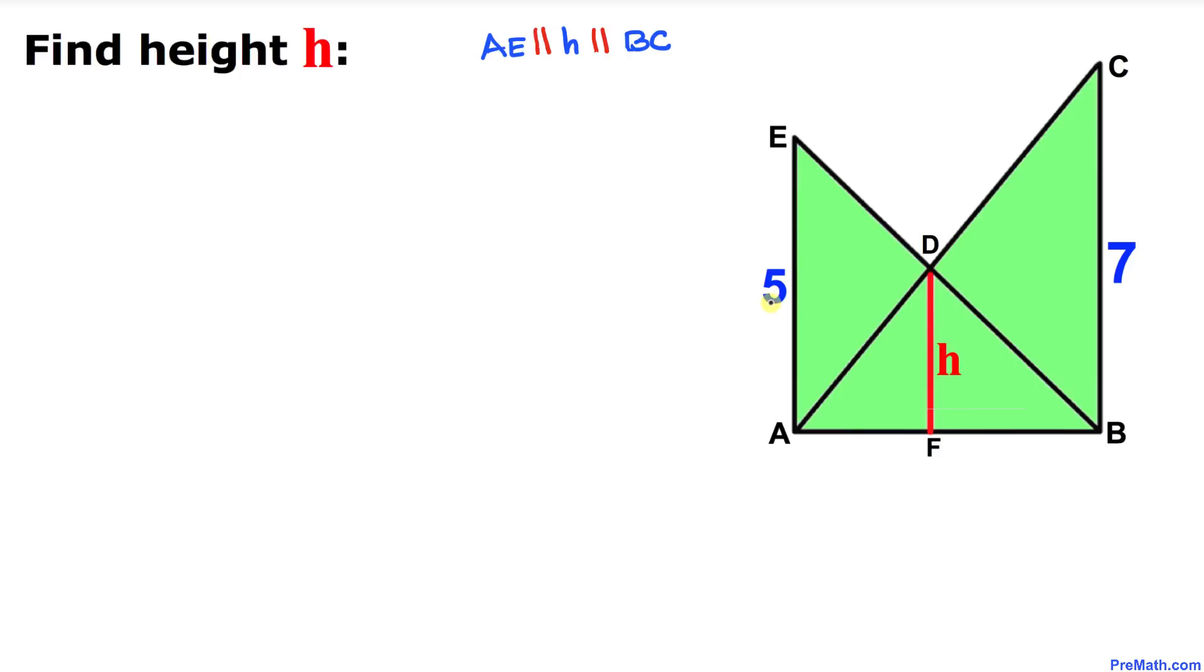Welcome to PreMath. In this video tutorial we have three parallel walls A, E, D, F, and C, B as you can see in this figure. Moreover, we have two cross ladders B, E and A, C such that they intersect each other at this point D.